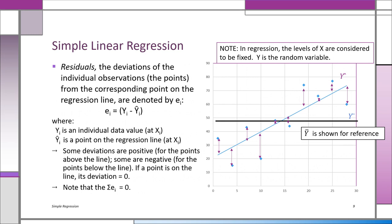Here you can see the residuals — they're vertical distances, either positive (above the line) or negative (below). The residual is defined as e-i equals y-i minus y-hat-i. The sum of all residuals always equals zero, which is why we look at the sum of squared residuals instead. Squaring them removes cancellation and gives us the SSE — the sum of squared residuals — which we then minimize.